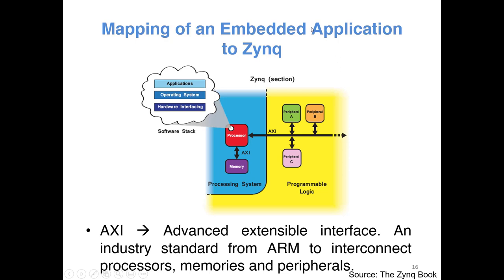Looking at a more detailed view: inside PS you have the processor and other peripherals. It also has built-in memory inside the PS portion. The processor can run a simple operating system — it can actually run the Linux kernel. We will be writing application code in C or C++ in the lab, and hardware drivers as well — all running on the processor. In the PL part, you have your custom peripherals, and the processor can communicate with these custom peripherals through the AXI interface.